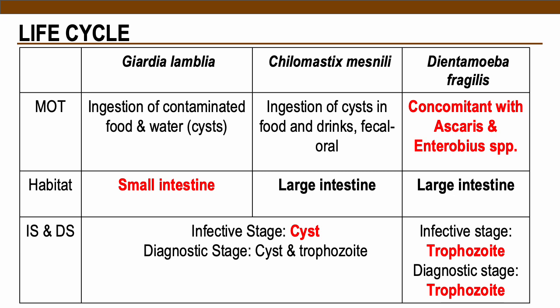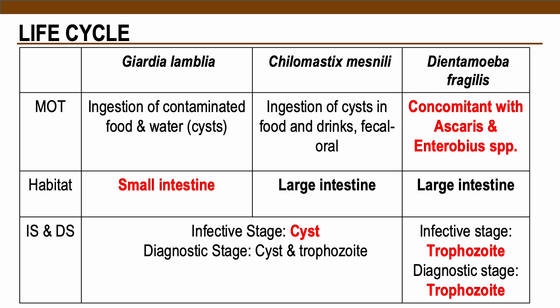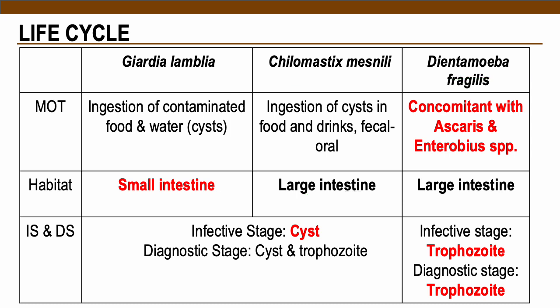Now let's move on to the life cycle of the three intestinal flagellates. Most flagellates are acquired by ingestion of contaminated food and water with the cyst — this applies to Giardia lamblia and Chilomastix mesnili. For Dientamoeba fragilis, the trophozoite is the infective stage, and this is concomitant with Ascaris and Enterobius species. In terms of habitat, Chilomastix mesnili and Dientamoeba fragilis inhabit the large intestine, while Giardia lamblia inhabits the small intestine. The infective and diagnostic stage for Giardia lamblia and Chilomastix mesnili is the cyst, while for Dientamoeba it is the trophozoite.